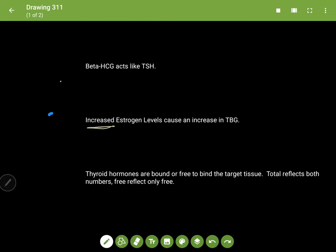So beta-HCG acts like TSH. It acts like TSH so much that it binds to the thyroid and causes the thyroid to secrete T4, which is the hormone in highest percentage that the thyroid secretes, and some T3.